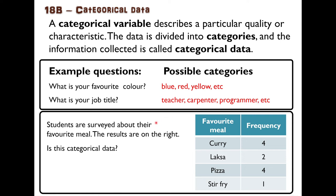As an example, here students are surveyed about their favourite meal. The results are on the right. Is this categorical data? It has numbers, but yes — all of the responses fit into categories. You ask the question, what is your favourite meal? And the responses are words. They fit into categories.